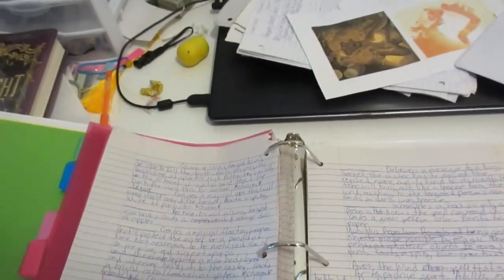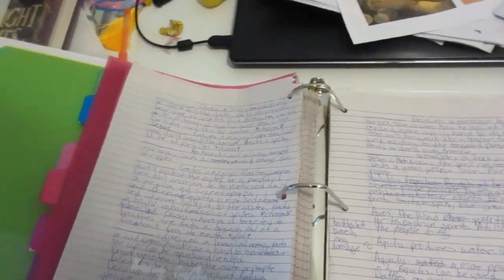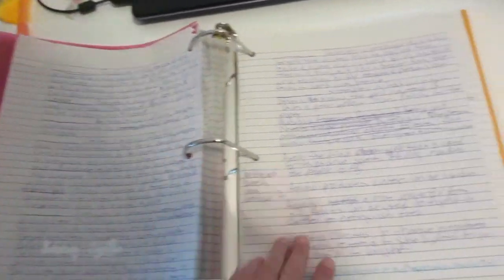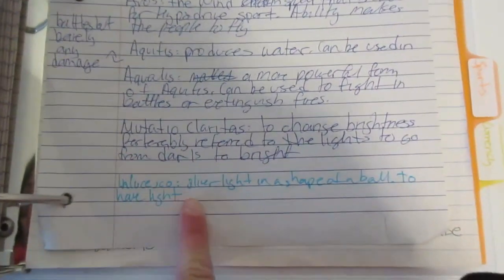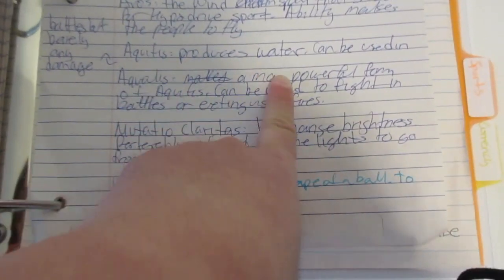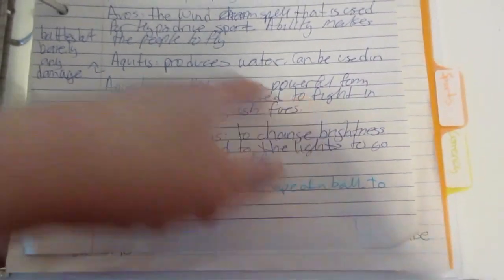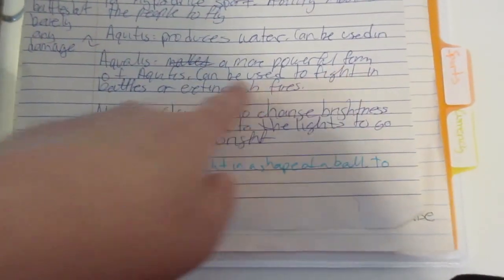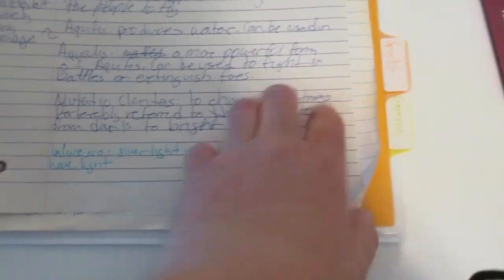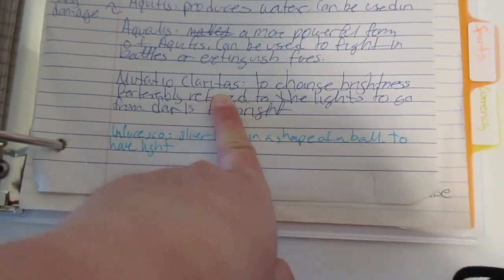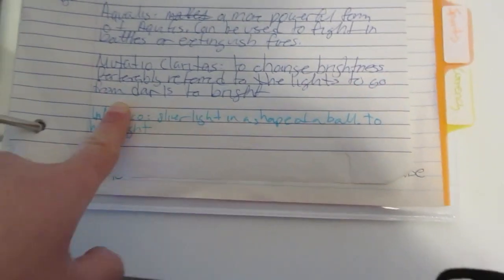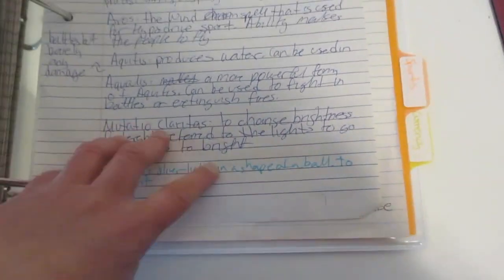So you know, we got Great Latin and all that, and so yeah, and just incantations, we got Aquarius which is just water spell, and then Aquiferous, it's just a more powerful form of water. But we also got Metatio Claratus which is just to change brightness, you know, things like that.